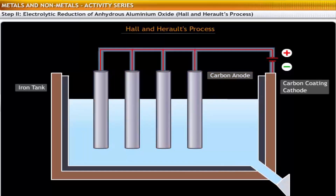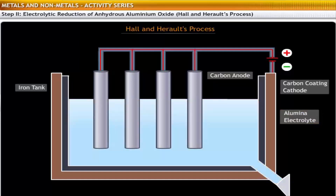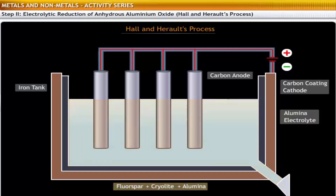Alumina, Al₂O₃, serves as the electrolyte. Fluorspar and cryolite are mixed with the electrolyte to increase its electrical conductivity and decrease the fusion temperature.